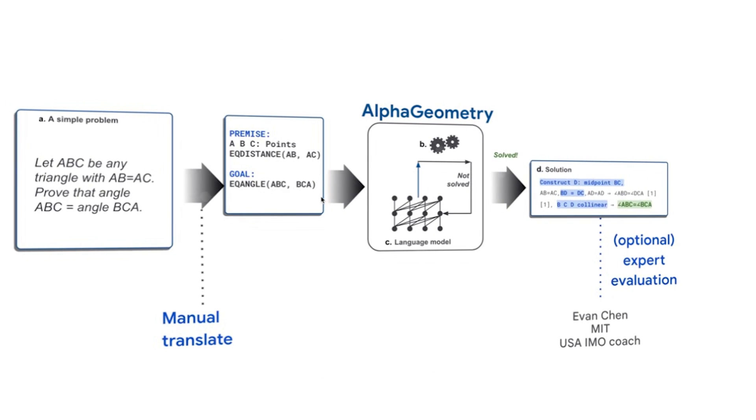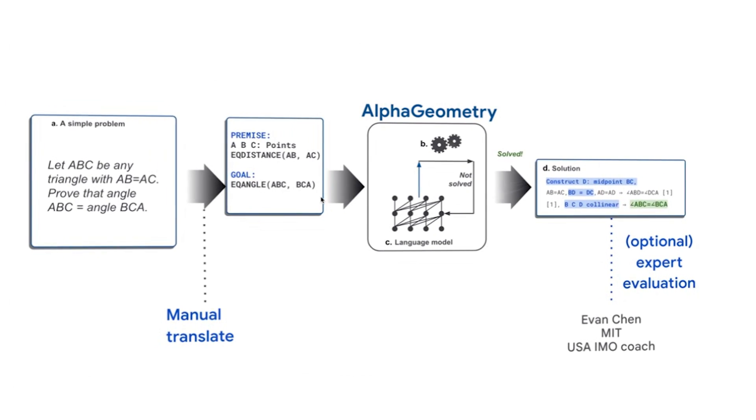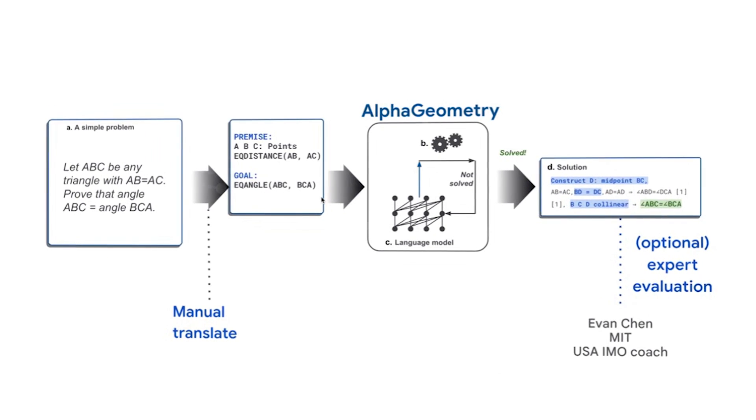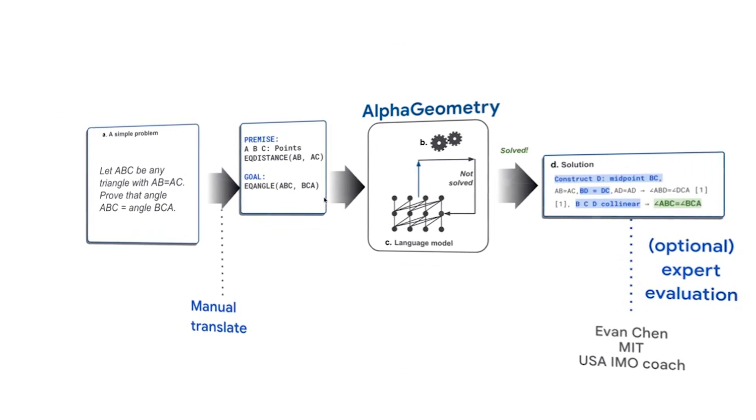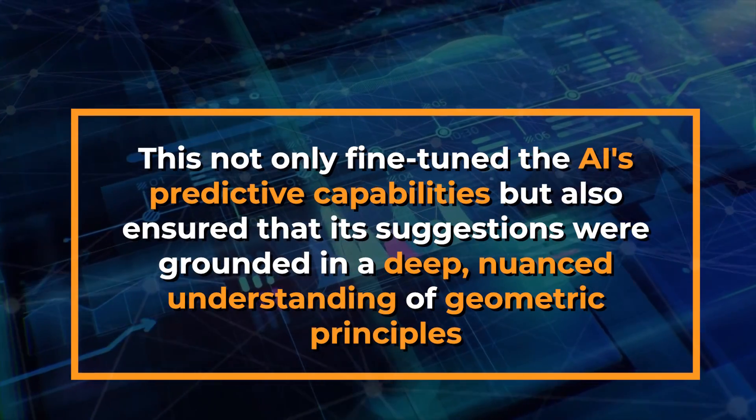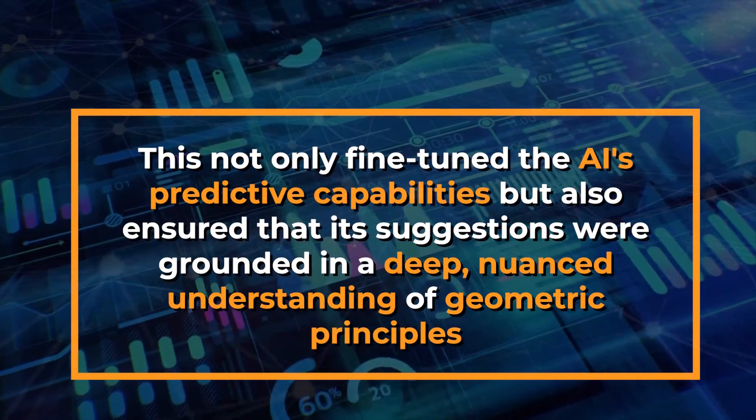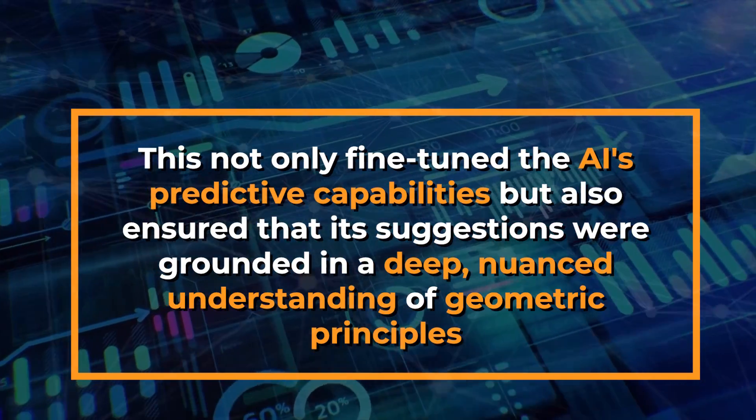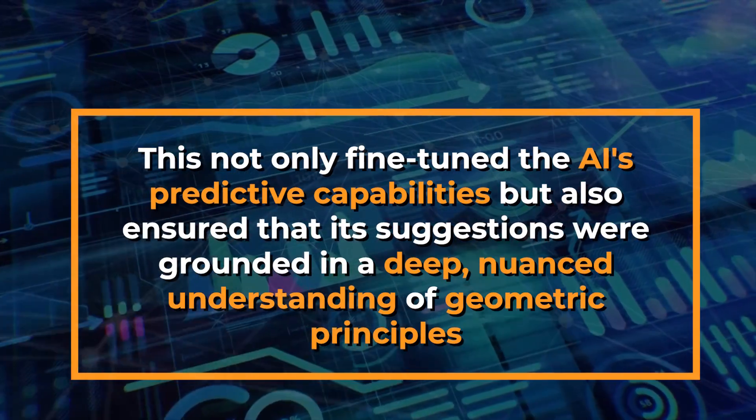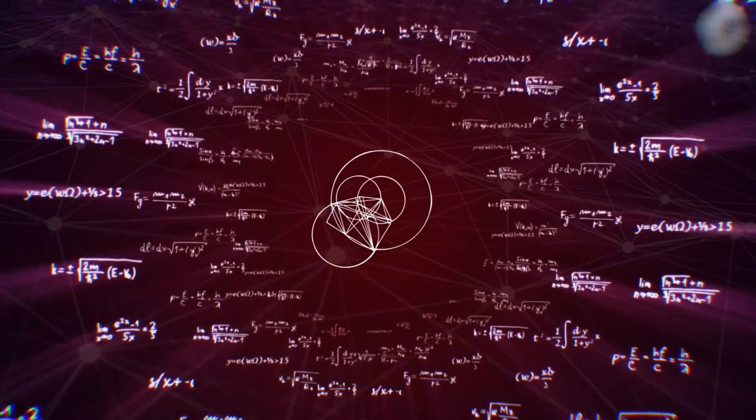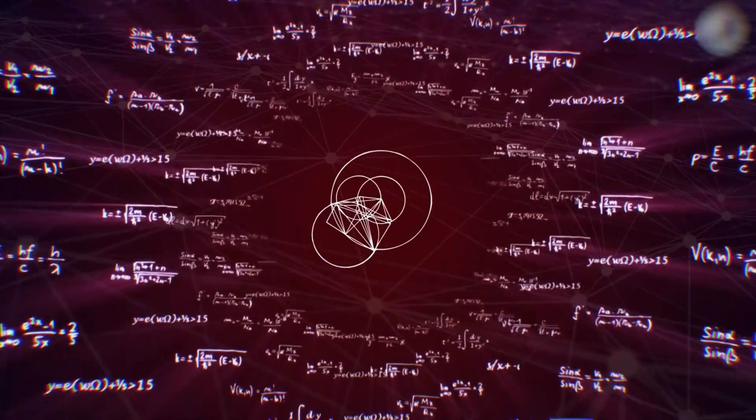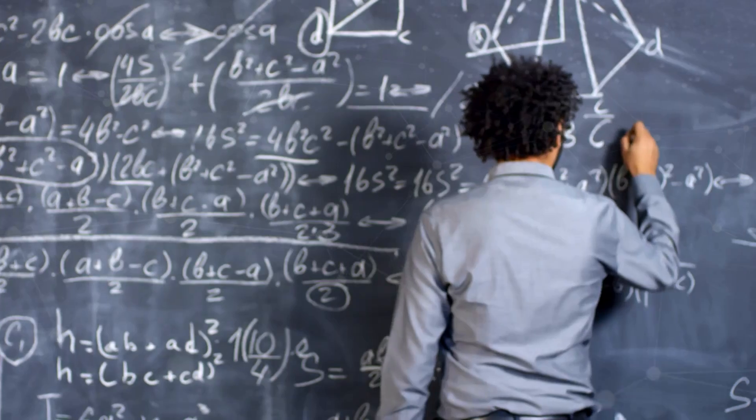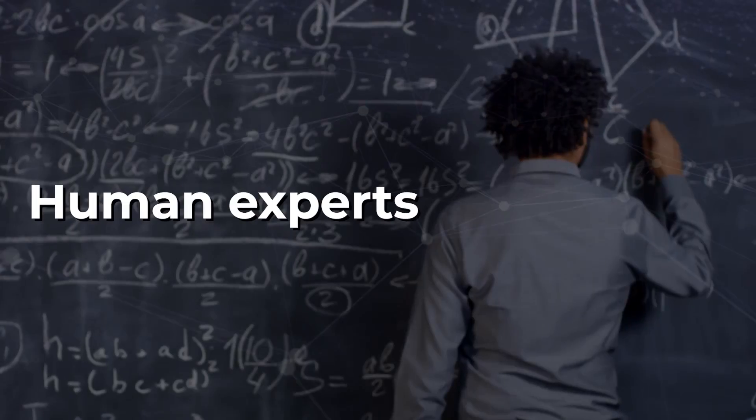This dataset served as the training ground for Alpha Geometry's neural language model, equipping it with a diverse array of geometric scenarios far beyond what any textbook could offer. This not only fine-tuned the AI's predictive capabilities, but also ensured that its suggestions were grounded in a deep, nuanced understanding of geometric principles. By learning from this synthetic universe of geometric problems, Alpha Geometry developed an intuition for geometry that rivals, and in some cases surpasses, that of human experts.